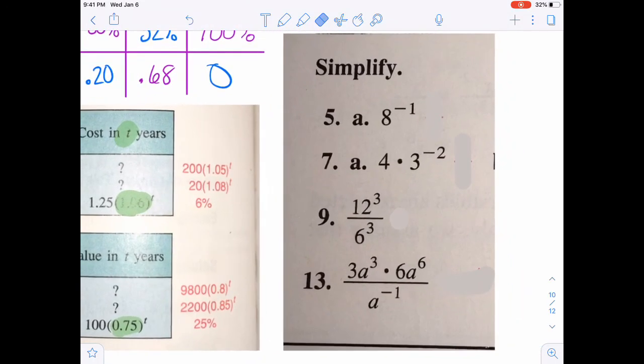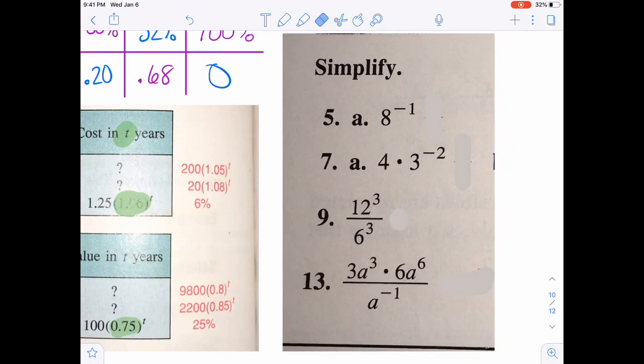Let's simplify these over here. The negative exponent tells us we're going to put it as a 1 over the 8 to a positive 1, so 1 eighth. On this next one, you'd have 4 times and then it would be over top of 3 squared. So it'd be 4 over 3 squared, just 4 ninths.